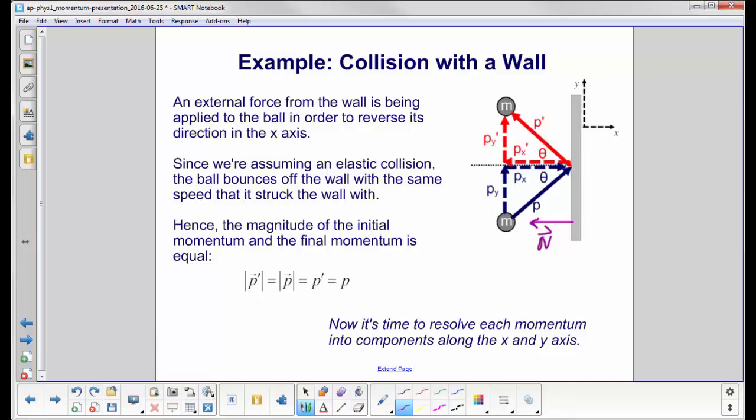Since we're assuming an elastic collision, the ball bounces off the wall with the same speed that it struck the wall with. There's no loss of kinetic energy. Of course there is, but it's going to be so slight we're going to ignore it. So if the velocity is the same and the mass is the same, excuse me, not the velocity, the speed, the magnitude of the initial momentum and the final momentum has to be equal. So here's the final momentum. It equals the initial momentum. So we'll get rid of the magnitude and vector signs and just say that p prime there, the magnitude there, is equal to p.